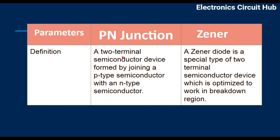Now let us understand the difference between PN junction diode and Zener diode. Definition: a PN junction diode is a two-terminal semiconductor device formed by joining a P-type semiconductor with an N-type semiconductor. A Zener diode is a special type of two-terminal semiconductor which is optimized to work in the breakdown region.